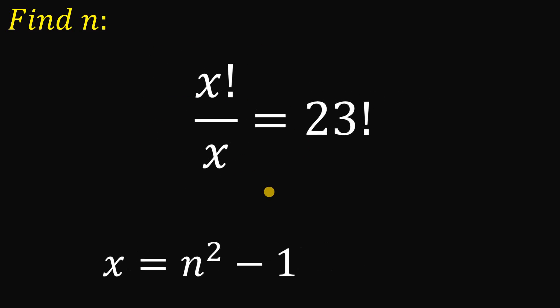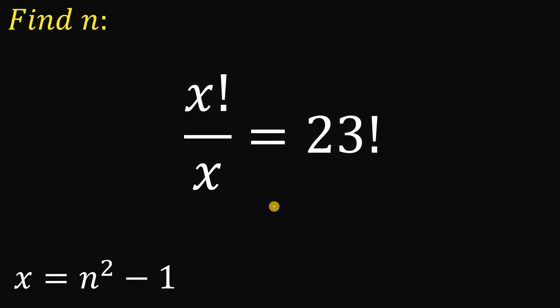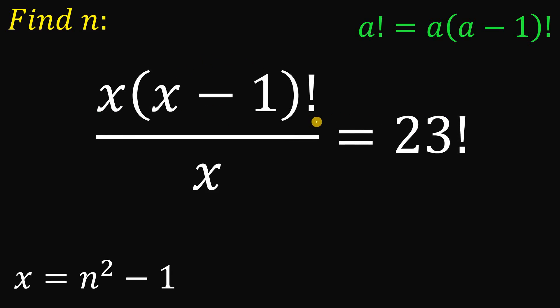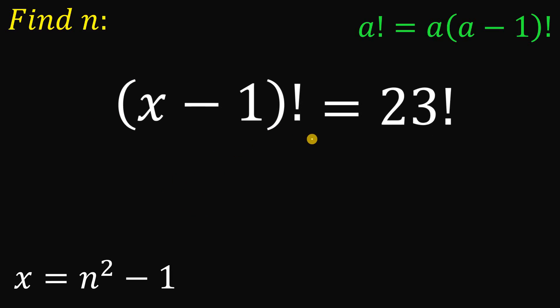And now let's focus on this equation. And here we will use one identity for factorial. Take note, when we have a factorial, it must be equal to a multiply by a minus 1 factorial. So we can rewrite the numerator as follows: we have x multiply by x minus 1 factorial. Now the question is why we do that? Because we can eliminate a factor of x on the numerator and a factor of x on the denominator. So the left hand side is just x minus 1 factorial.